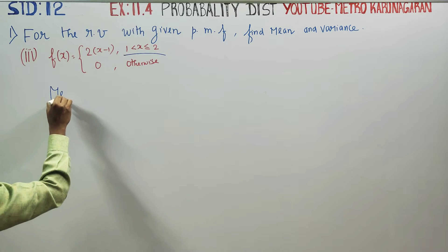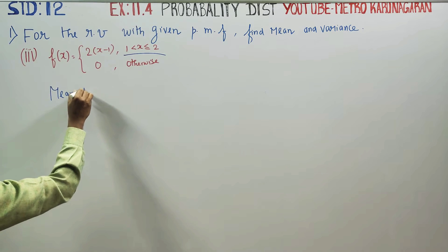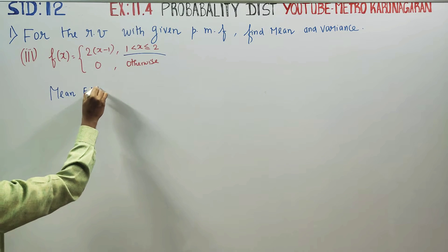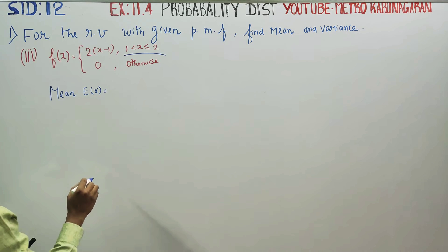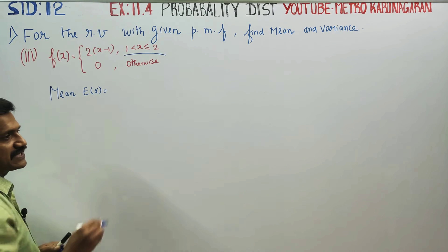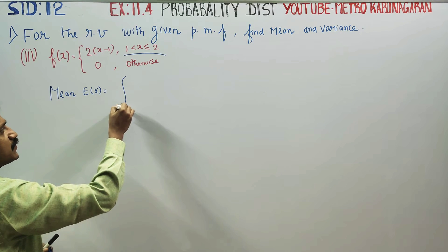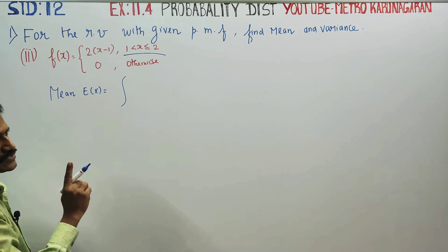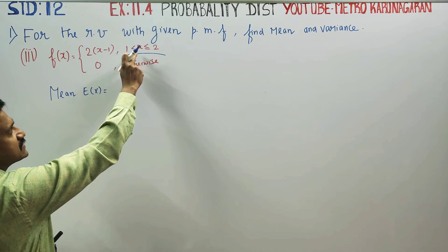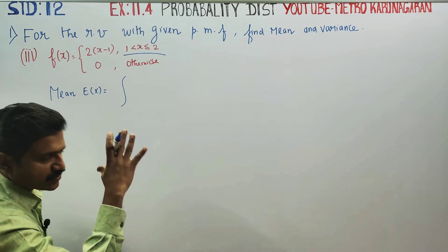First we are entering into mean. Mean is the expectation of x. For discrete we use sigma, but this is continuous, so we use integration. If you look at integration, this is continuous where x takes exact values.